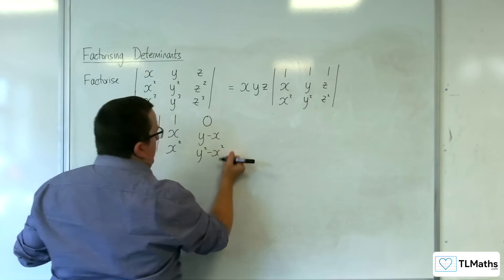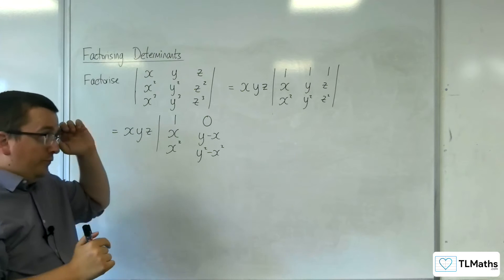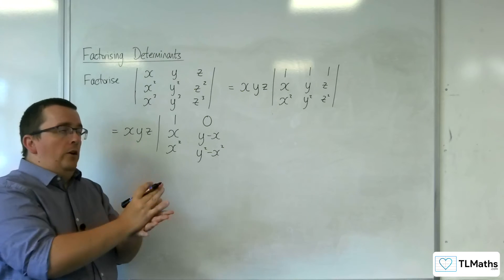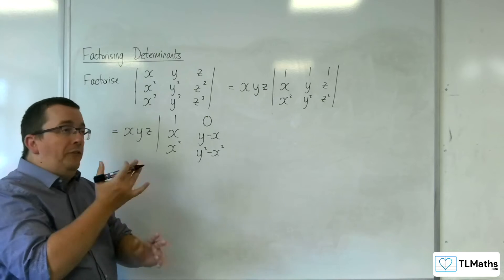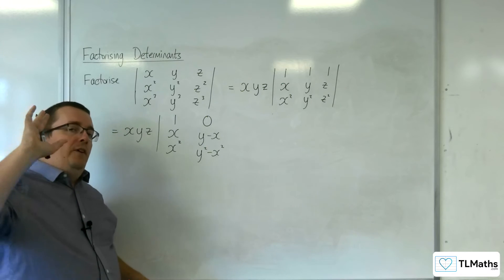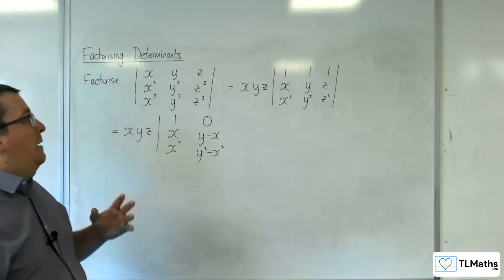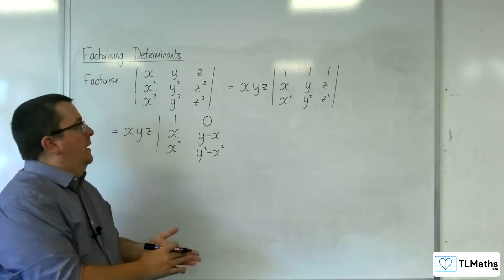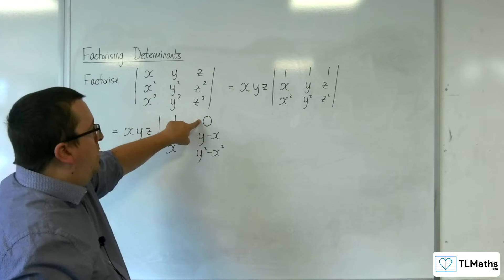Now you might be wondering why I've done that. Well, the first reason is that I want to try and get zeros. If I can get zeros, then that makes finding the determinant a whole lot easier. And now I've got 0 in that top row.